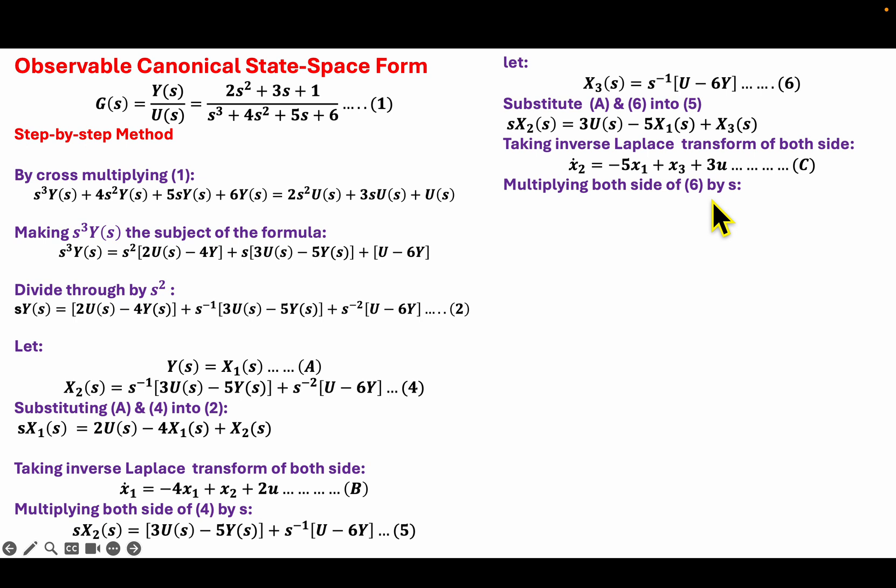So multiplying both sides of 6, which is this equation, by S, I will obtain this equation. I will then substitute A, which is Y equals X₁, into 7 in order to obtain this equation. So taking the inverse Laplace transform again, I will obtain equation D.